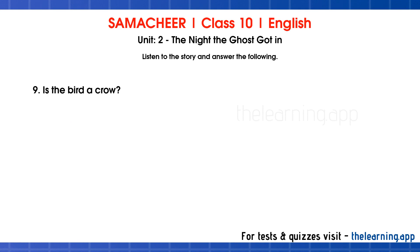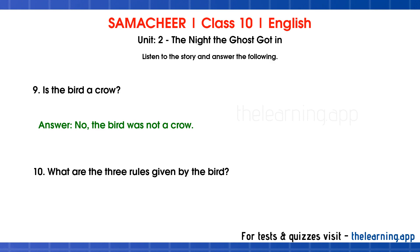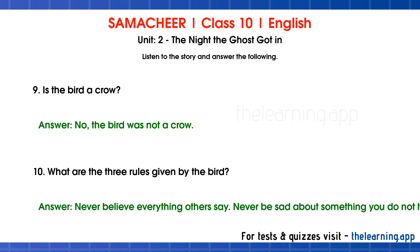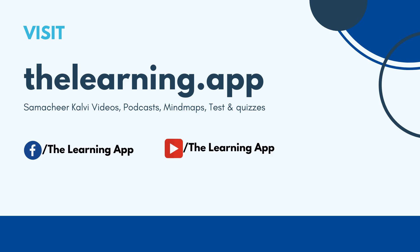Question 9: Is the bird a crow? Correct answer is: no, the bird was not a crow. Question 10: What are the three rules given by the bird? Correct answer is: never believe everything others say; never be sad about something you do not have; never throw away what you have in your hand.